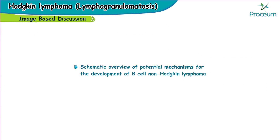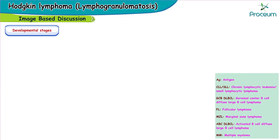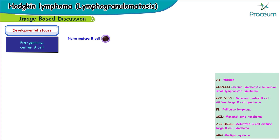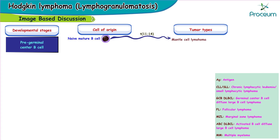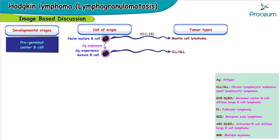Here's a schematic overview of potential mechanisms for the development of B-cell non-Hodgkin lymphoma. Naive mature B-cells, as the cell of origin, can undergo a t(11;14) translocation to form mantle cell lymphoma. When naive mature B-cells are exposed to an antigen, they form antigen-experienced mature B-cells and can get transformed into CLL or SLL.